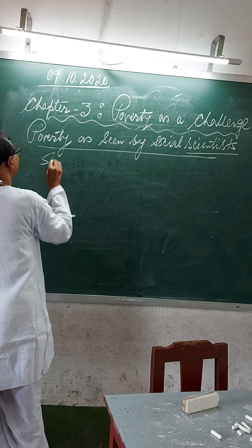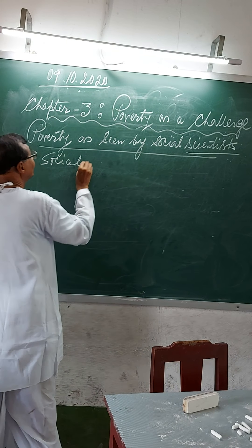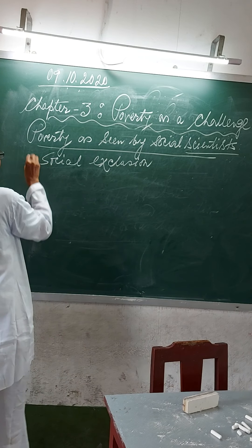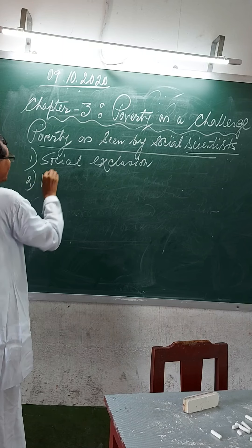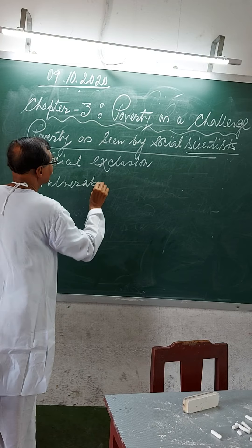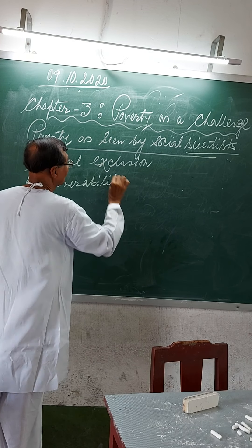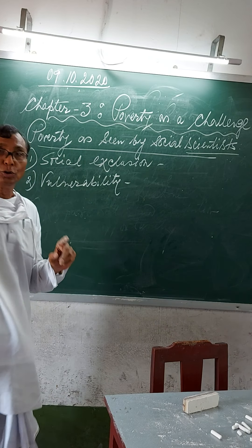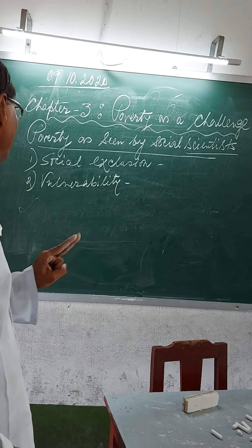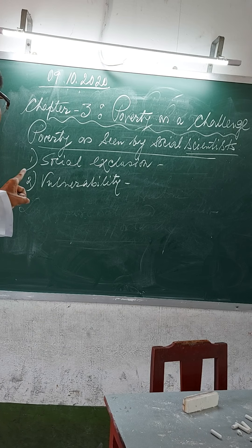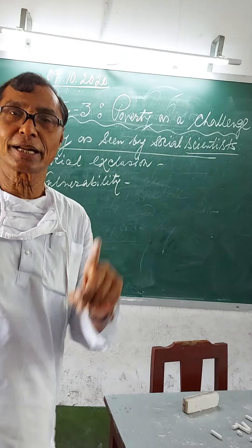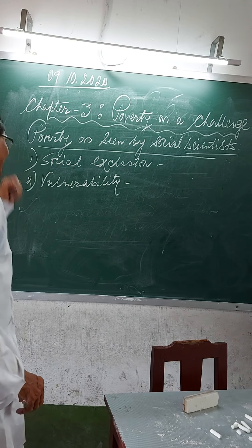The two types are: number one, social exclusion, and number two, vulnerability. You must have to know these two types — social exclusion and vulnerability.